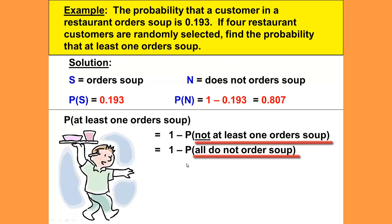So we have 1 minus the probability that all do not order soup. Well, how many are we talking about? We're talking about four, so we'll need four parentheses.